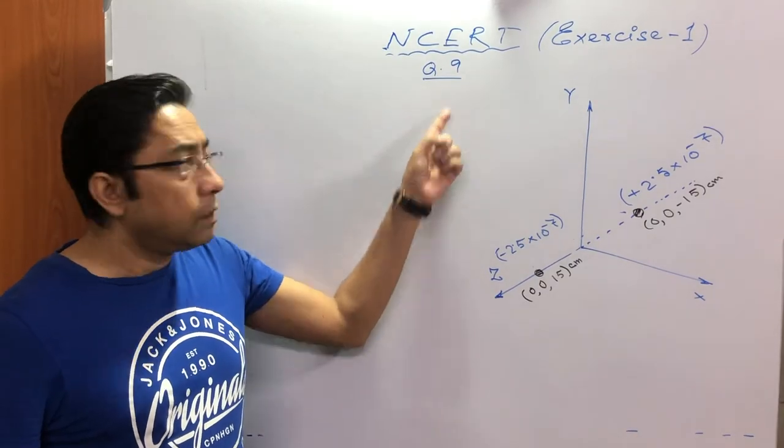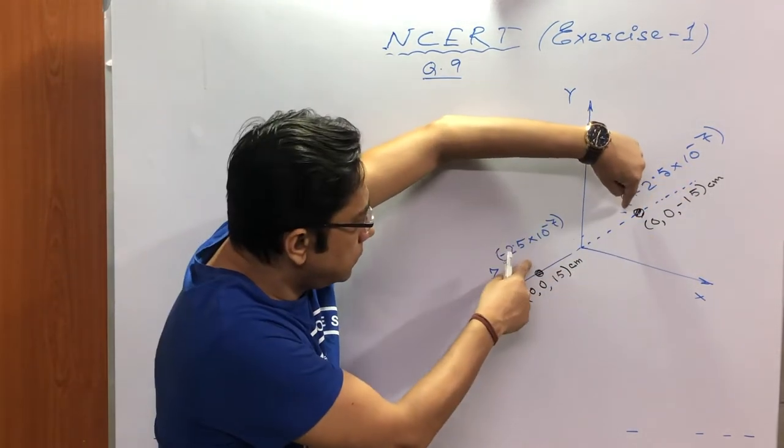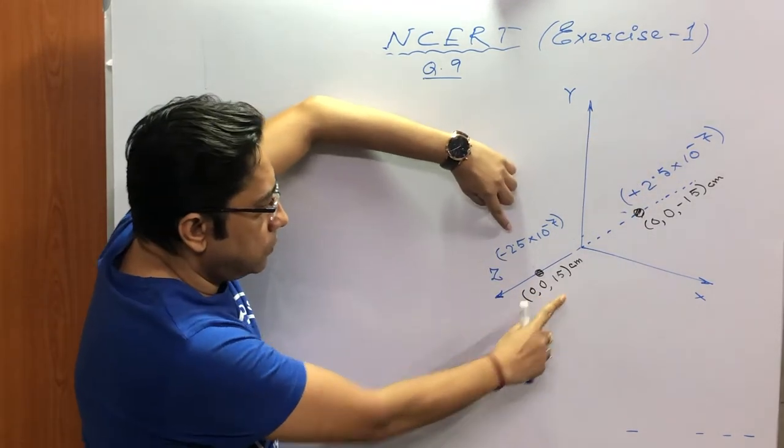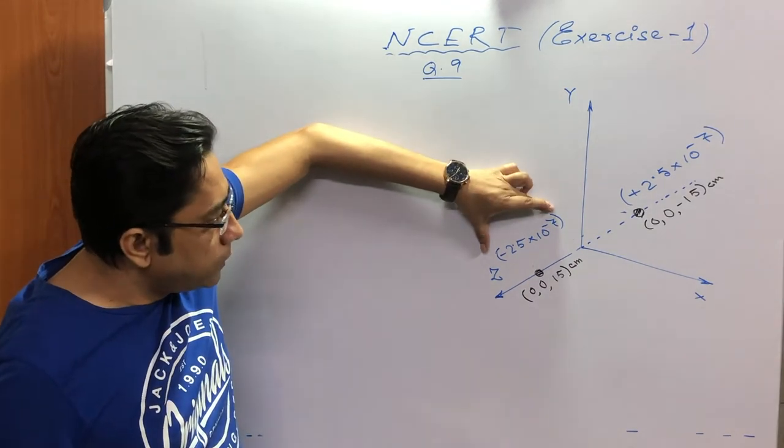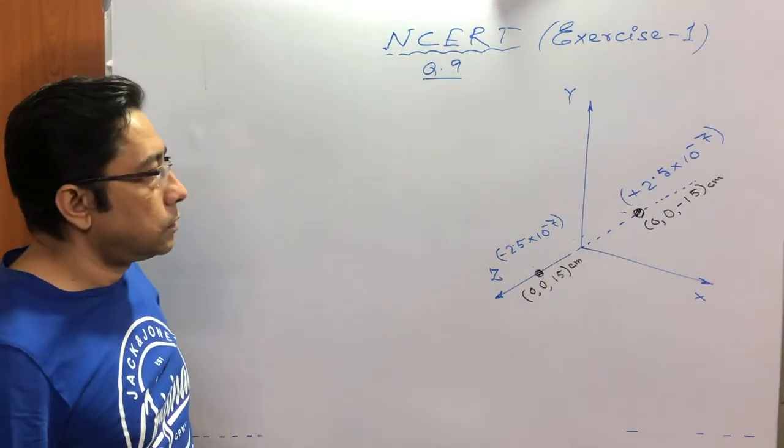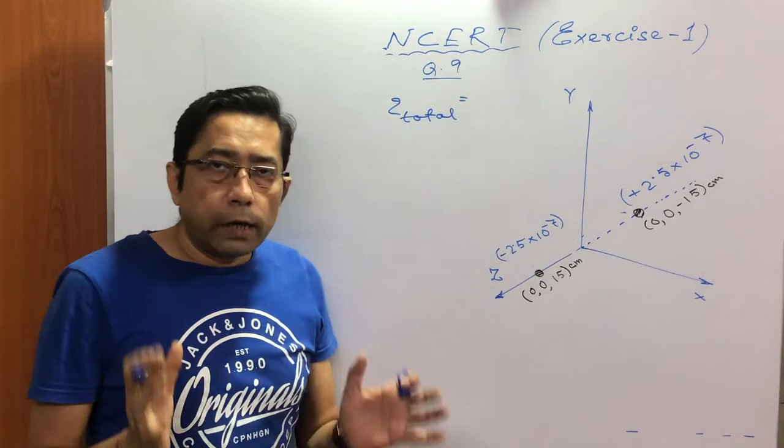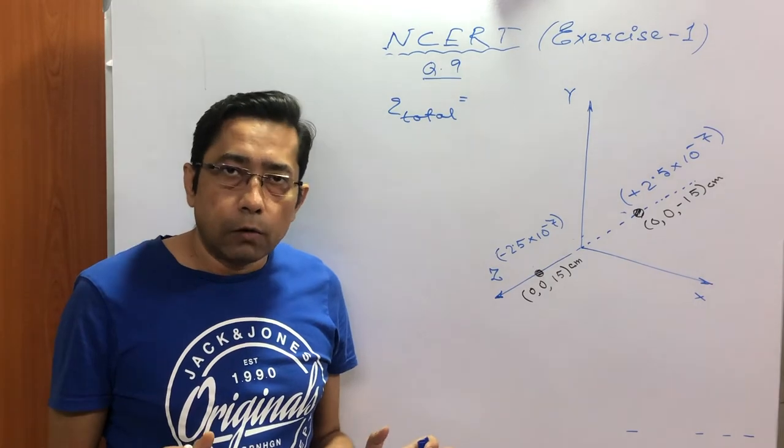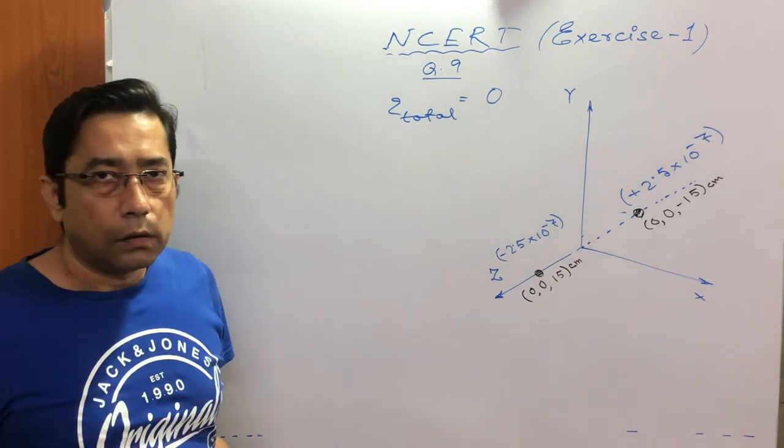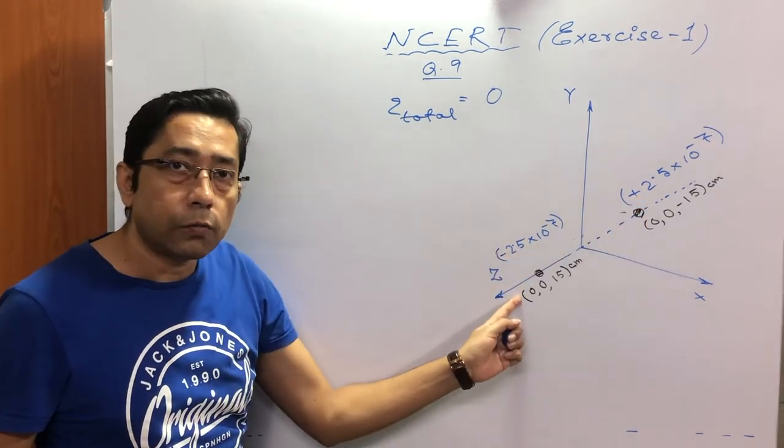This is question number 9. I have already drawn it: Y axis, X axis, and this is Z axis. Two charges are placed at these two points: 0, 0, 15 and 0, 0, minus 15. At 0, 0, 15, that is along Z axis, the charge is minus 2.5, 10 to the power minus 7, and the other charge is plus of that much. Now it is asked what is the total charge Q total. My suggestion is don't try this sum at home when you are alone, it is a top sum because total charge, plus and minus, is zero. This is the dipole, equal and opposite charges.